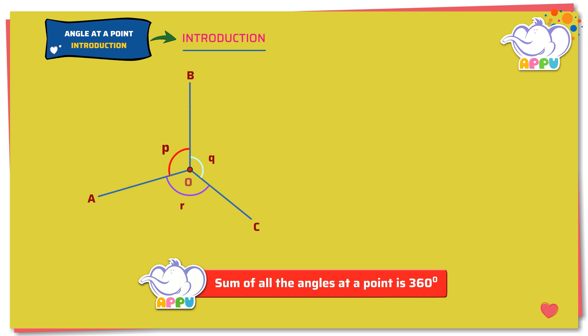So we have angle P plus angle Q plus angle R equals 360 degrees. Angle P is the same as angle AOB. Angle Q is the same as angle BOC. Angle R is the same as angle COA. So angle AOB plus angle BOC plus angle COA equals 360 degrees.